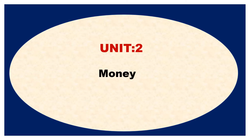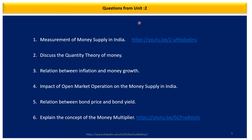Unit two of the syllabus is on money. In unit two, you can prepare important questions like measurement of money supply in India, the quantity theory of money — a very important theory given by Fisher — relationship between inflation and money growth, the impact of open market operations on money supply in India, the sale and purchase of securities and how it impacts money supply, relationship between bond price and bond yield, and the concept of money multiplier.